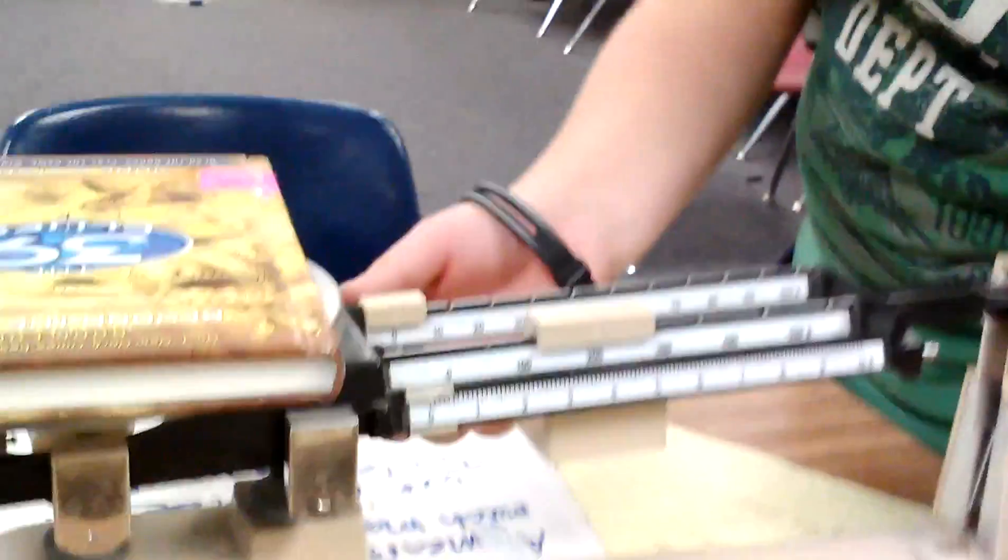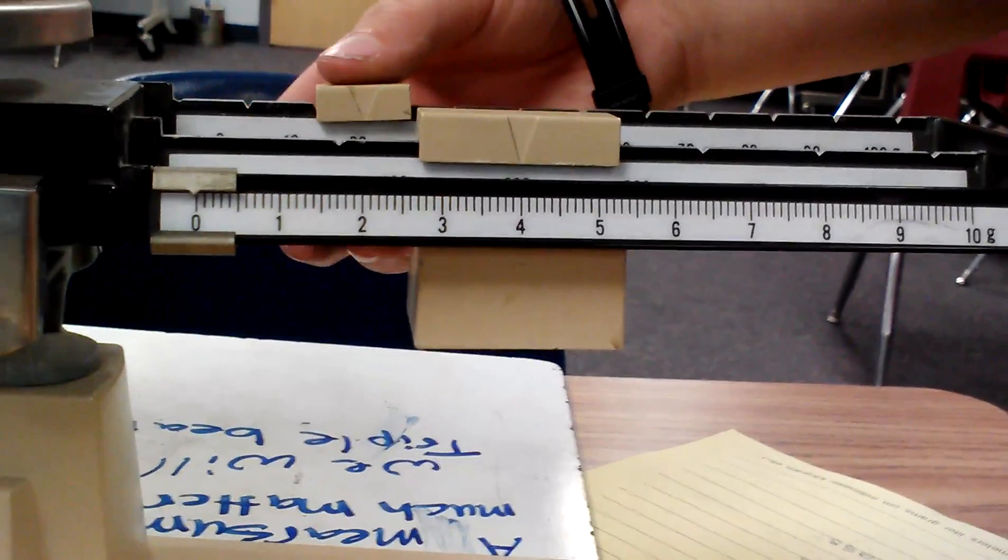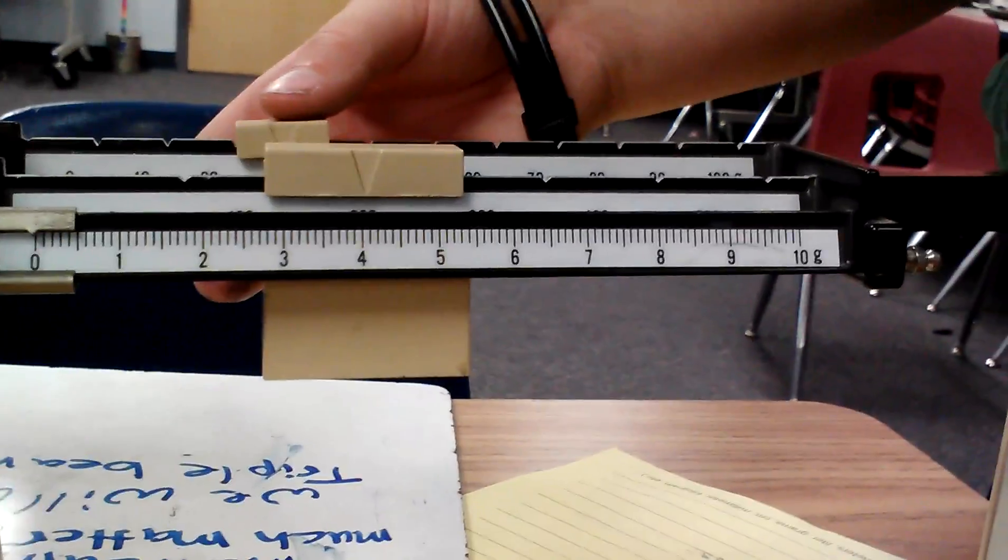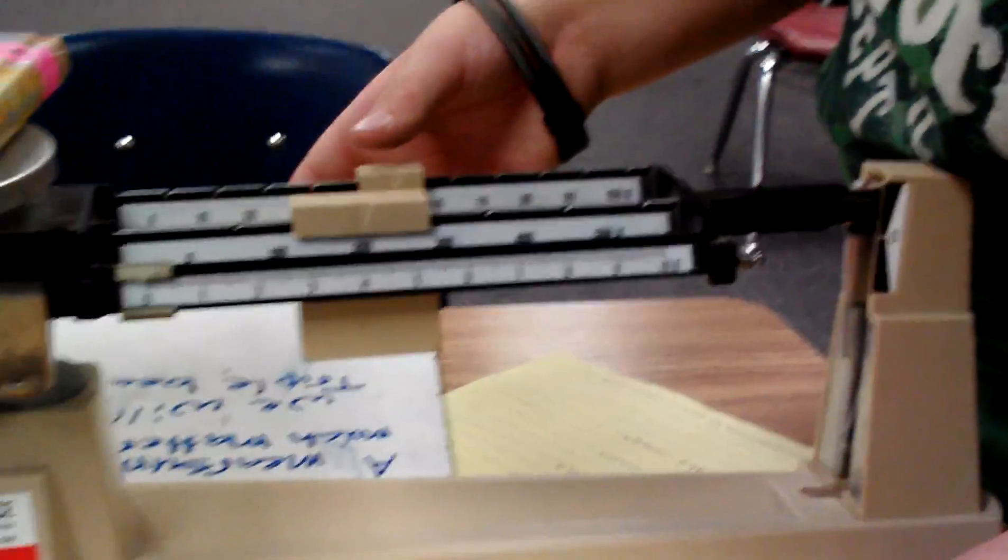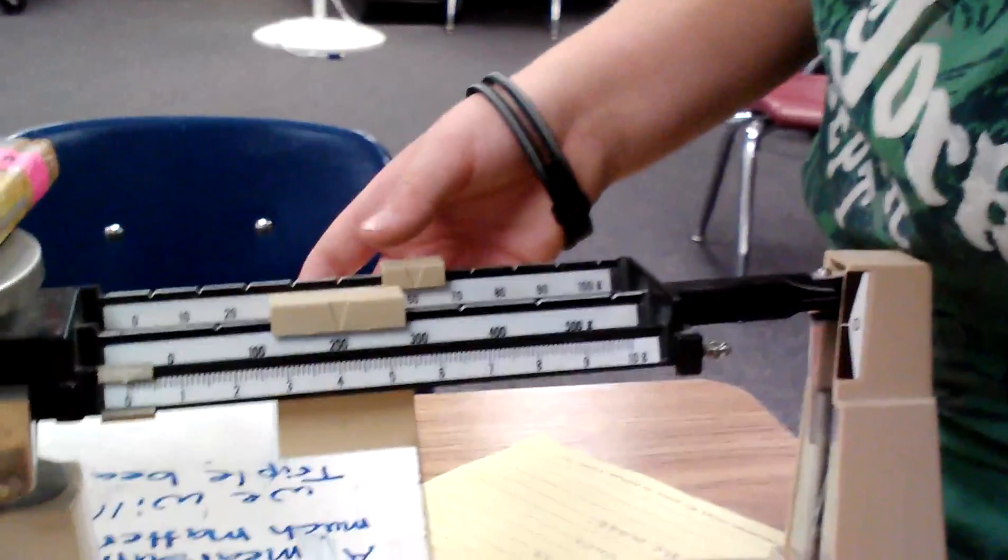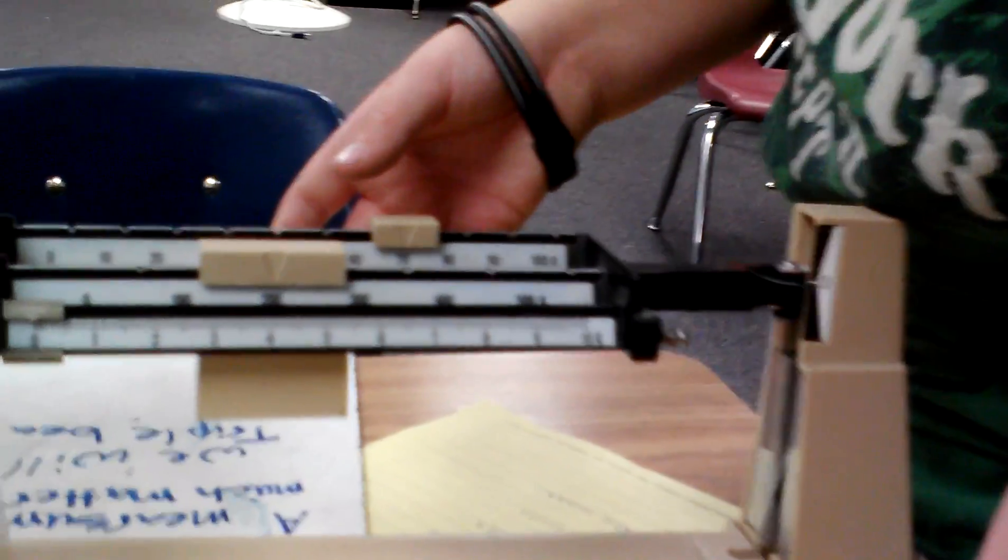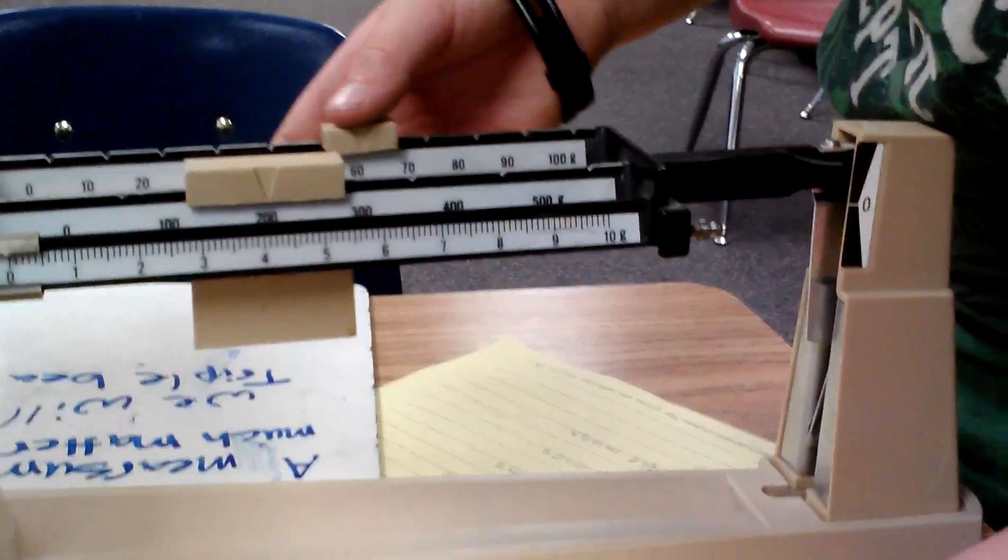And I'm going to move the tens. There's a ten. 20. 30. 40. 50. 60. 70. 70 is too much, so I'm going to go back to 60.